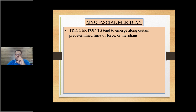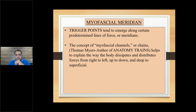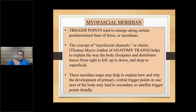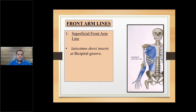The myofascial meridians — a specific set studied by Thomas Myers in his book called Anatomy Trains — show how the entire body is connected. First you begin with muscles, then we talk about the coverings of these muscles. The meridian maps may help explain how and why the development of a primary central trigger point in one area of the body may lead to secondary or satellite trigger points along the fascial covering. So a trigger point formed in the upper back, left untreated, can form another trigger point along the fascia.